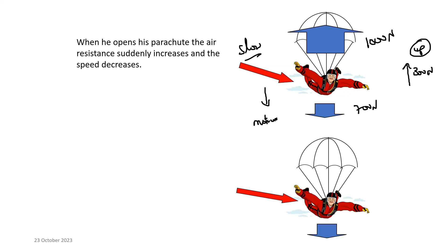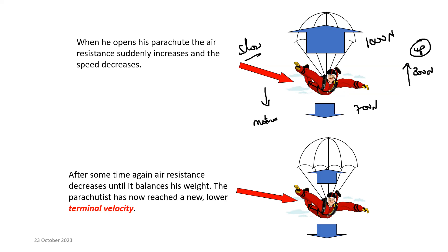As he slows down, the air resistance will decrease, because air resistance depends on both the surface area and the speed at which the object moves. At the point the parachute opens, air resistance increased due to the larger surface area. But now, as his speed is decreasing, the air resistance decreases as well.